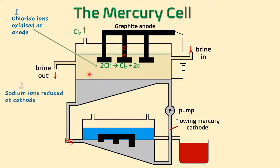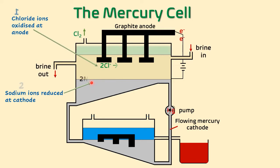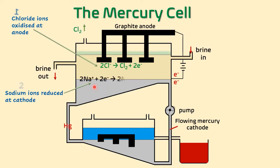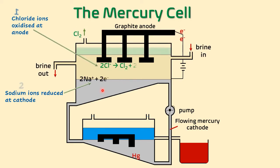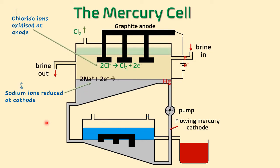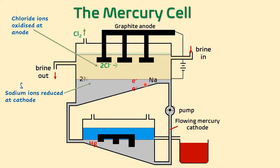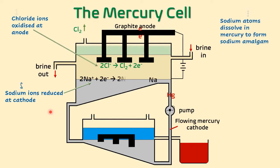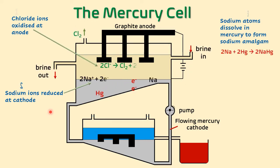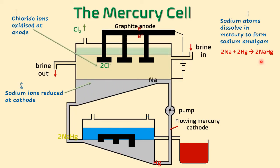The cathode is our site for reduction. Sodium ions this time are discharged, because the mercury electrode overcomes the potential between sodium ions and the hydrogen ions present in brine. The sodium ions gain the two electrons released from the anode and we form sodium atoms. Sodium atoms are in liquid state and dissolve in mercury to form sodium amalgam. Sodium amalgam is not a compound — it is simply sodium dissolved in mercury.